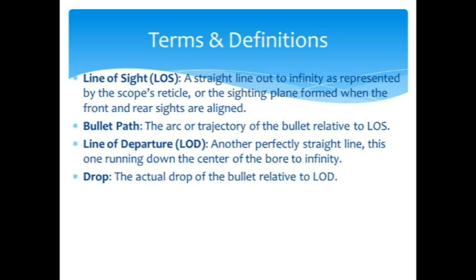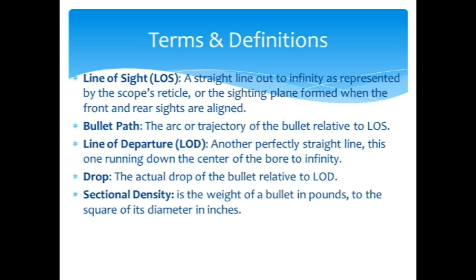Drop. That's the actual drop of the bullet relative to the line of departure. Sectional density is the weight of the bullet in pounds to the square of its diameter in inches. This is talking about the grain of the bullet.